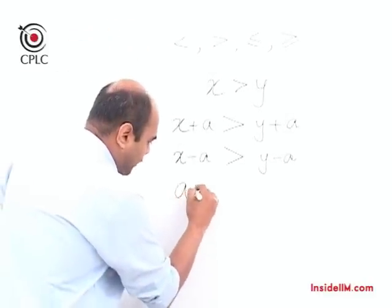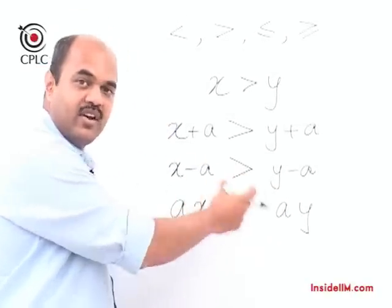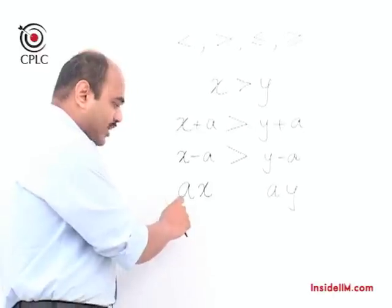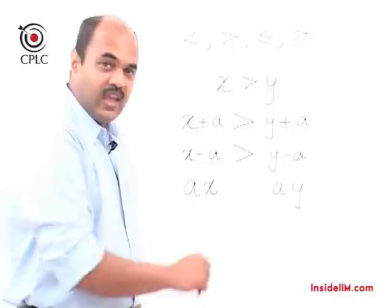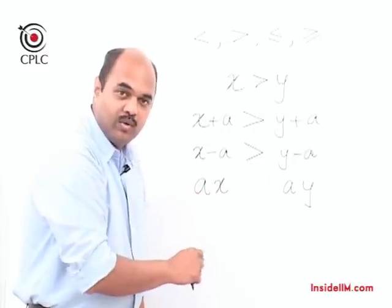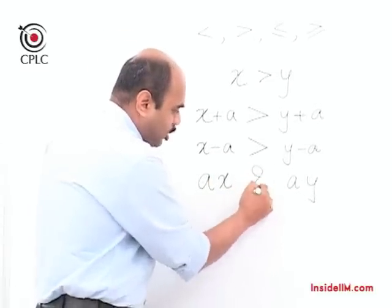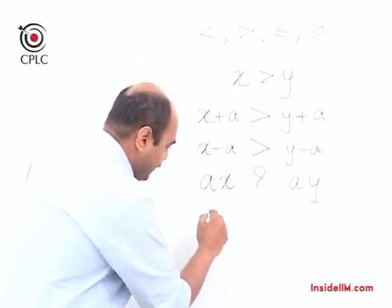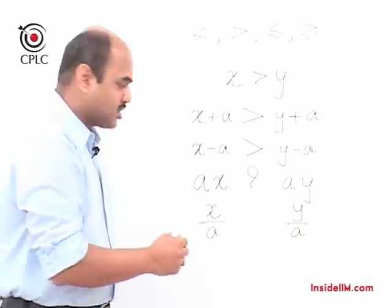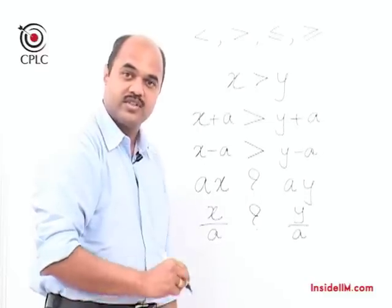What happens when we multiply the same term a on both sides? We can't say definitively that ax will be greater than ay, because the answer depends on whether a is positive or negative. If a is positive, then ax is greater than ay. However, if a is negative, then ax will become less than ay. Similarly, if we divide x by a and y by a, the situation is the same — we can't be sure, because the answer depends on the sign of a.